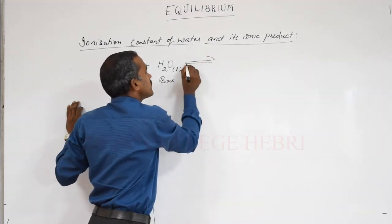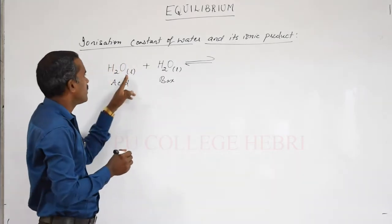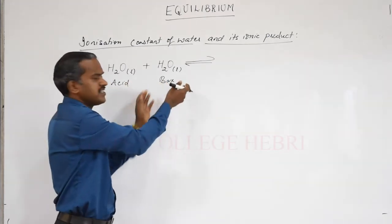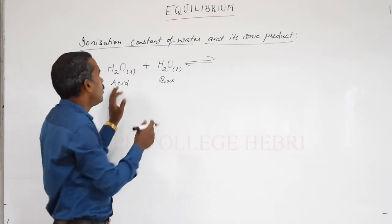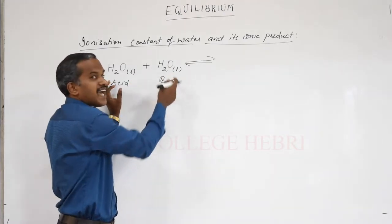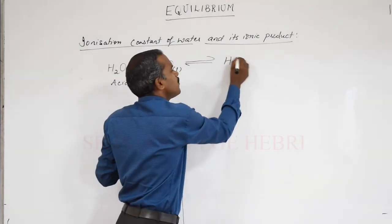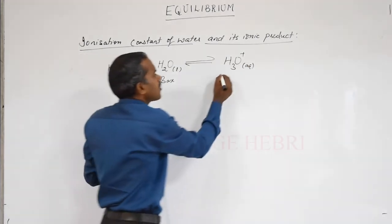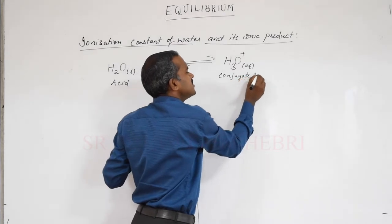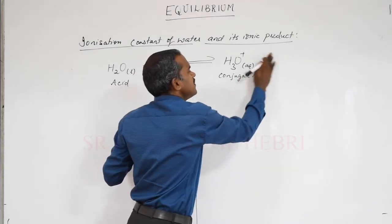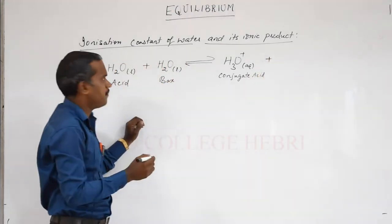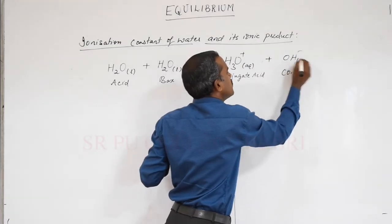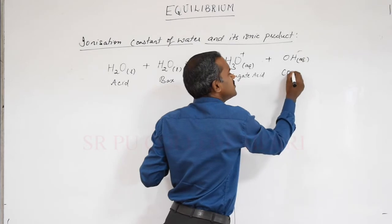There is an equilibrium after ionization of water. If it is an acid, its conjugate acid — for acid we write a conjugate base, for a base we write a conjugate acid. If the base accepts a proton, it becomes H3O+ in the aqueous form — that is the conjugate acid. The one which loses H+ becomes the conjugate base, OH−, also in the aqueous form.